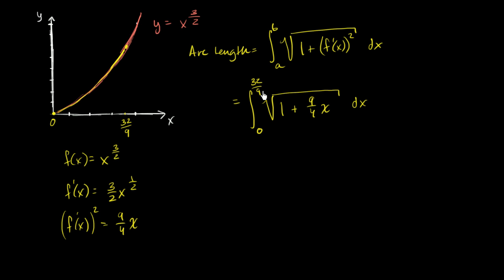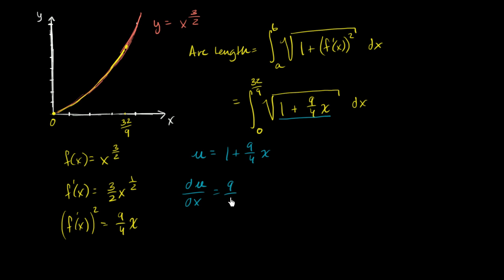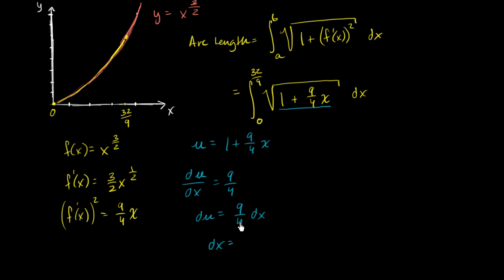Now we just have a definite integral we know how to solve. We can essentially do u-substitution. If u equals one plus nine over four times x, then du/dx equals nine fourths, or du equals nine fourths dx, which means dx equals four ninths du.